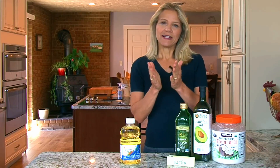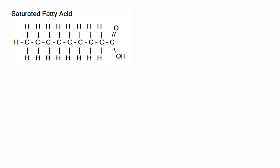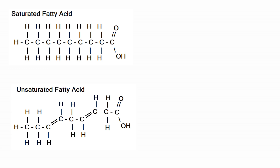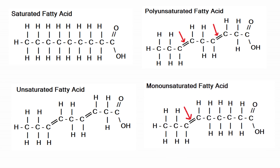What makes a fatty acid saturated or unsaturated is determined by how the carbon atoms are bonded together. Saturated fatty acids have just single bonds between the carbons, whereas unsaturated fatty acids have one or more double bonds. If there are at least two double bonds, it's a polyunsaturated fat. If there's just one, it is a monounsaturated fat.